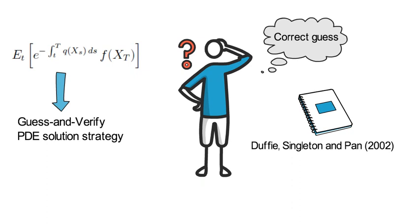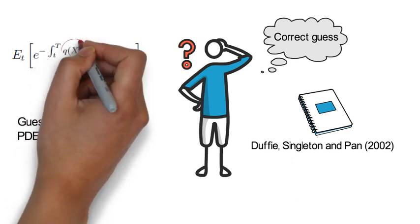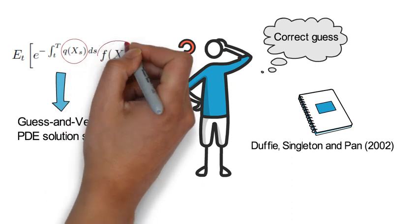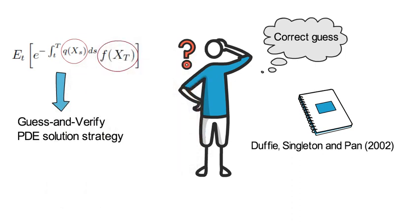In that work, the authors provide correct guesses to problems where q of X_T is an affine function in an Ito SDE for X_T, and where also f of X_T is an exponential affine function in X_T.